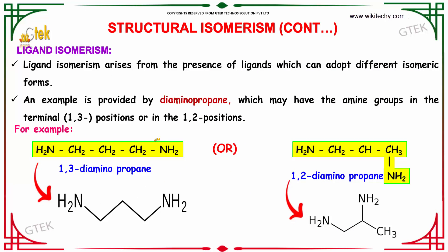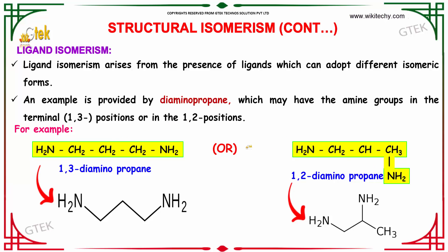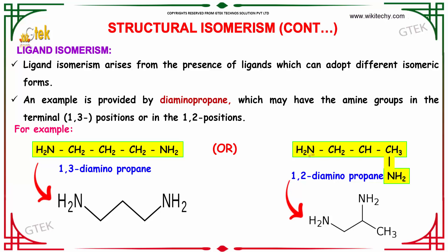The next one is ligand isomerism. Ligand isomerism arises from the presence of ligands which can adopt different isomeric forms. You can see that in one ligand, the NH2 groups are at positions 1 and 3, making it 1,3-diaminopropane. In the other, the NH2 groups are at positions 1 and 2, making it 1,2-diaminopropane. That is the difference between these two ligand isomers.